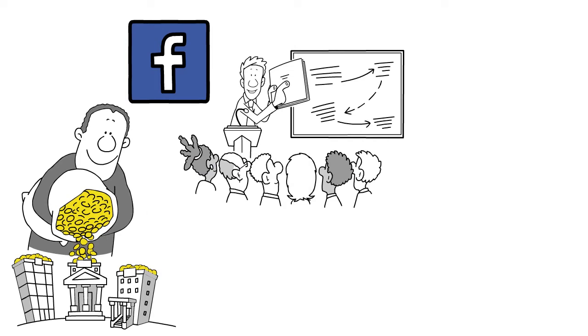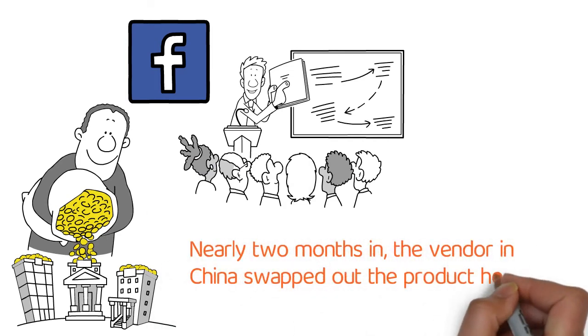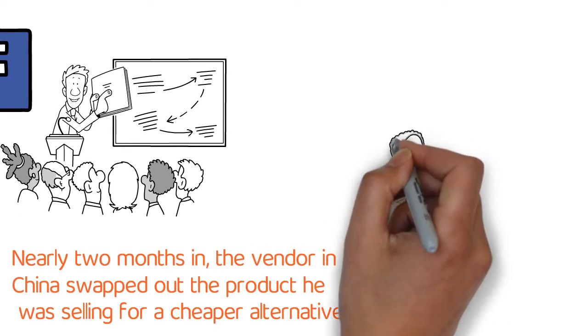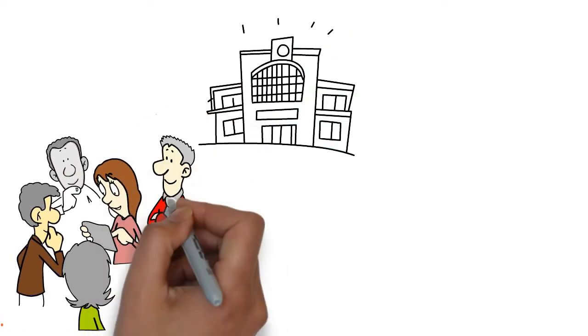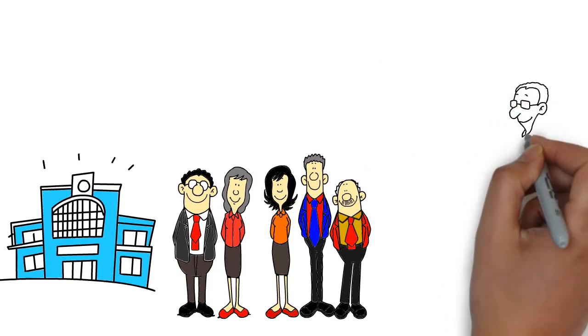It wasn't all ups though. Nearly two months in, the vendor in China swapped out the product he was selling for a cheaper alternative. Customers started complaining and Chapman had to adjust and pivot again. He ended up buying a 9,000 square foot warehouse and hired a five-person fulfillment staff.